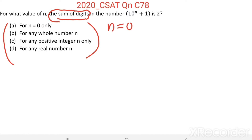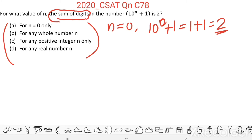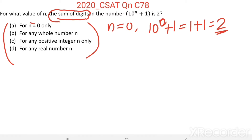Consider the first option: when n equals 0. 10 power 0 plus 1 equals 1 plus 1 equals 2. It's a single digit number, so the sum of digits in 2 equals 2. So for n equal to 0, the sum of digits in 10^n + 1 is 2. This option says for n equal to 0 only.